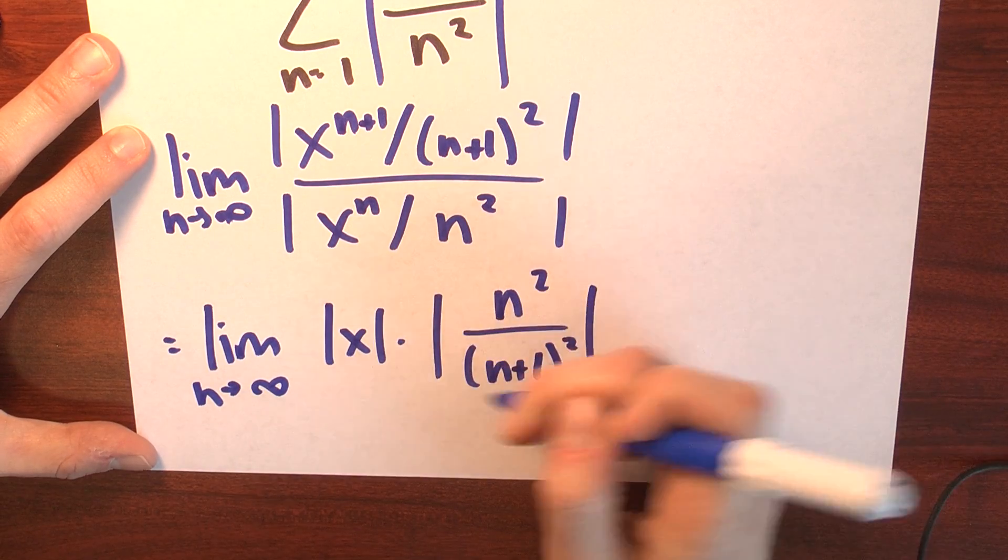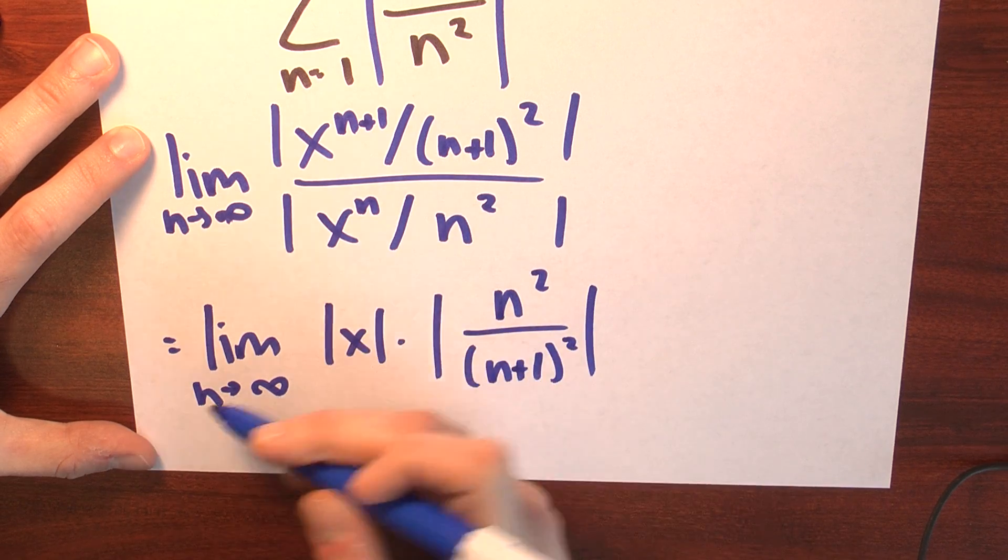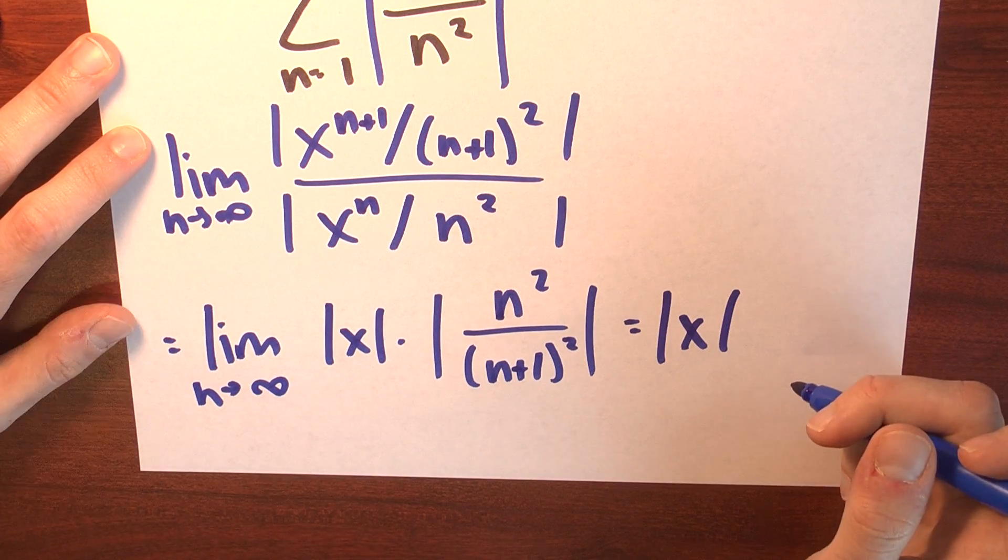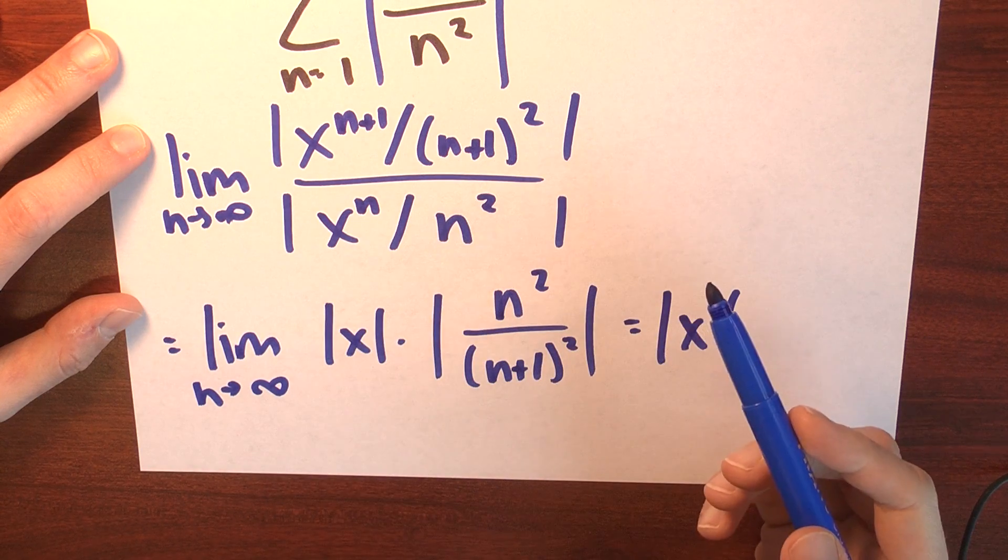When n is very large, this quantity here is very close to 1. And this x doesn't depend on n at all. So, this limit is just the absolute value of x. And this is the ratio between the n plus 1st and the nth term.